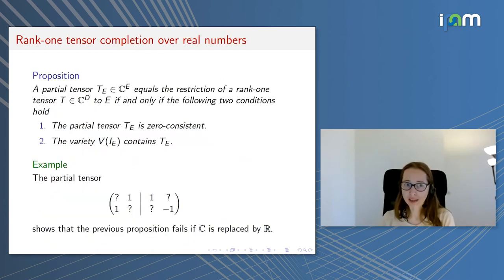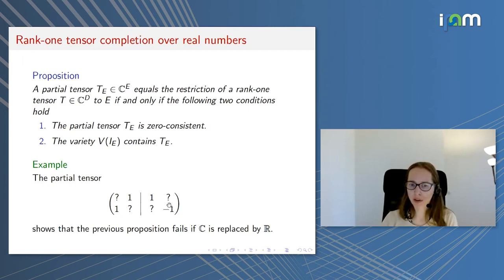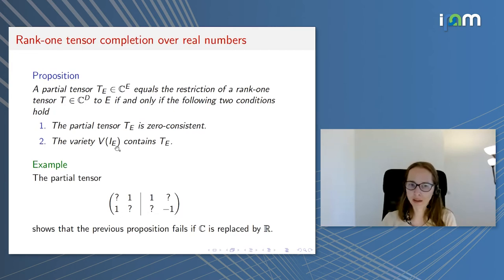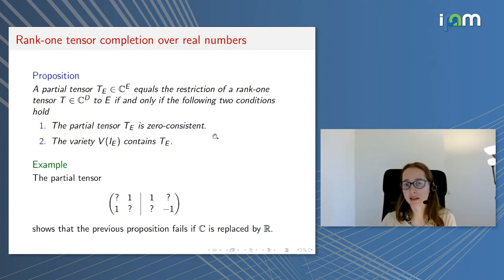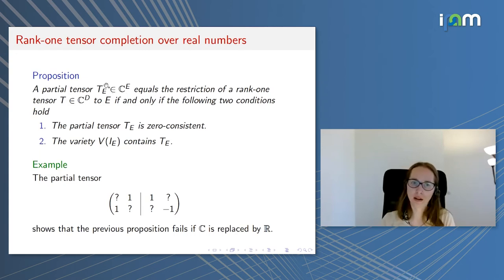As mentioned, this proposition does not hold over real numbers. For the example partial tensor, recall the ideal IE was the zero ideal, meaning the variety is everything, so this partial tensor belongs to the variety. But as discussed, this partial tensor does not have a rank-one completion over the real numbers. The reason this works over complex numbers comes from the extension theorem in algebraic geometry, which requires an algebraically closed field.